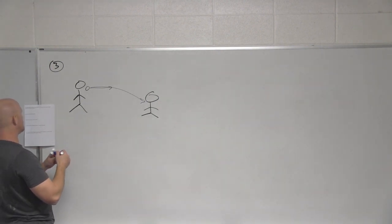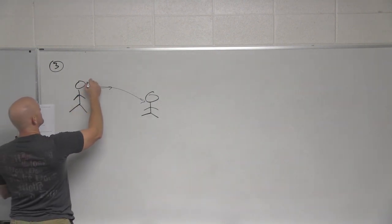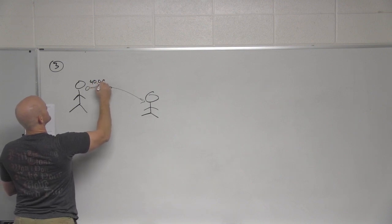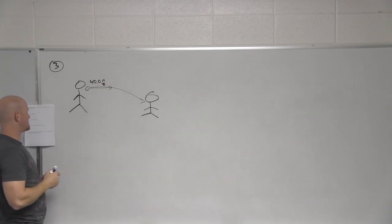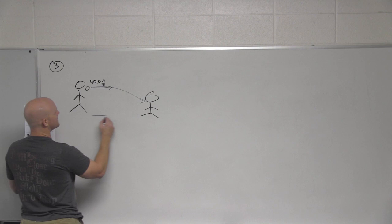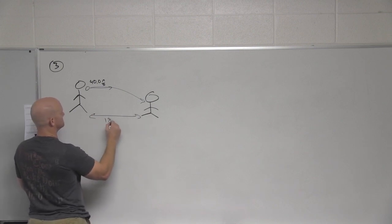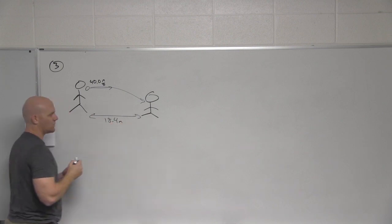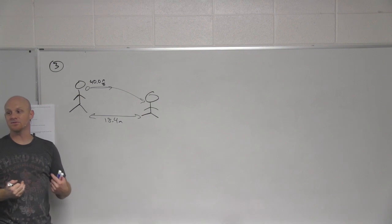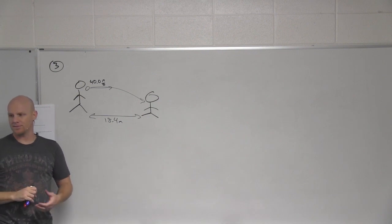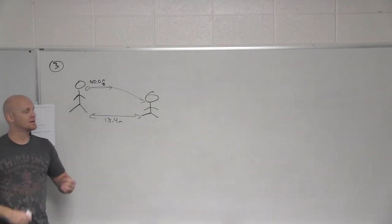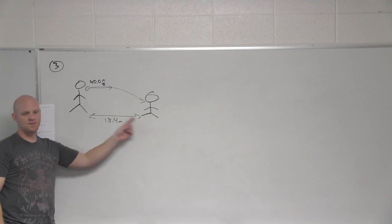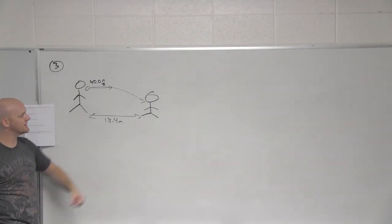number three says, pitcher throws a fastball horizontally with a velocity of 40 meters per second to the catcher. If the catcher is 18.4 meters away, which happens to correspond to 60 feet, 6 inches. If you don't play baseball, one, you should. And two, 60 feet, 6 inches is the standard distance from the mound to the home plate.